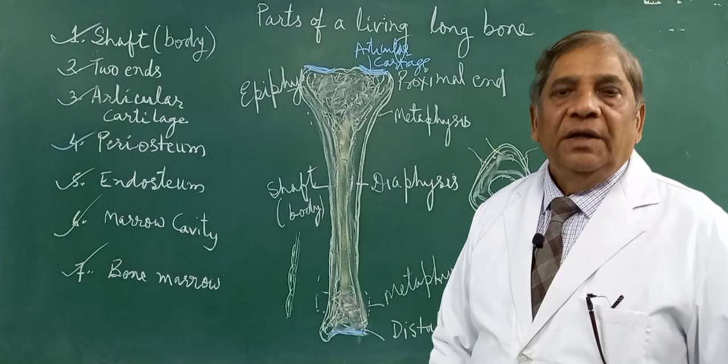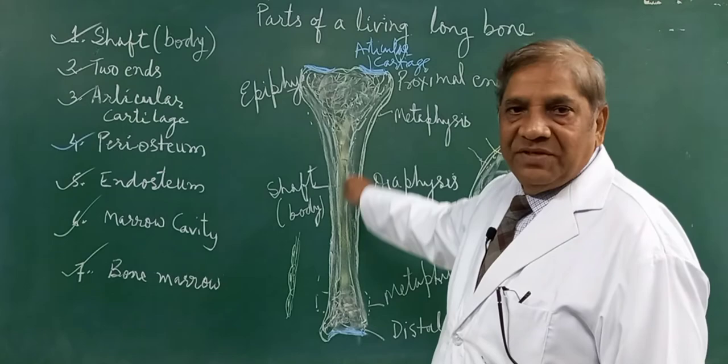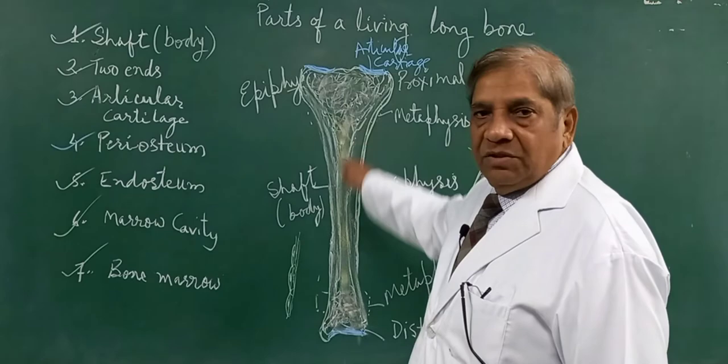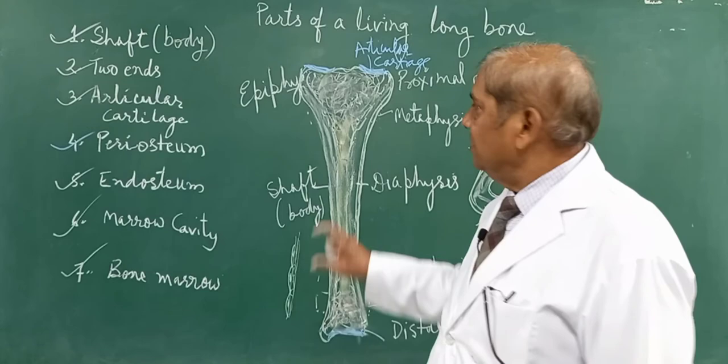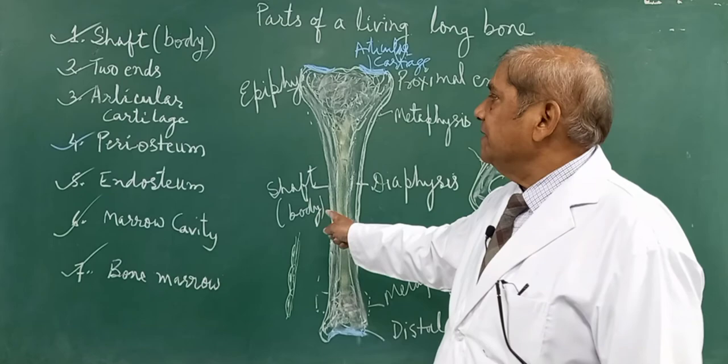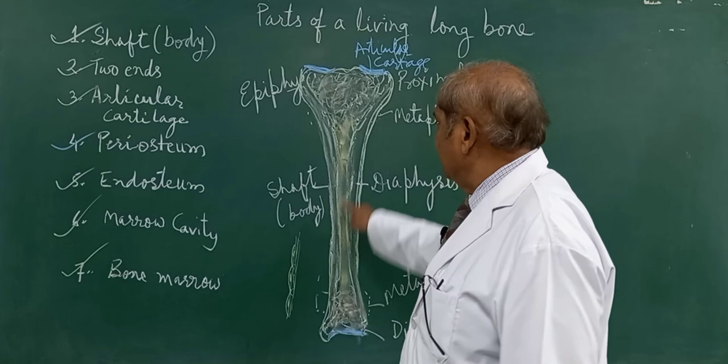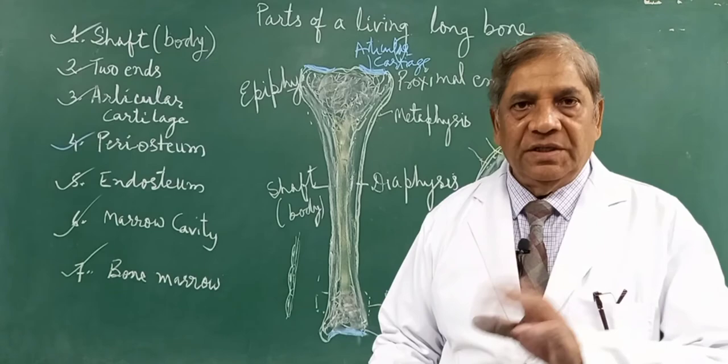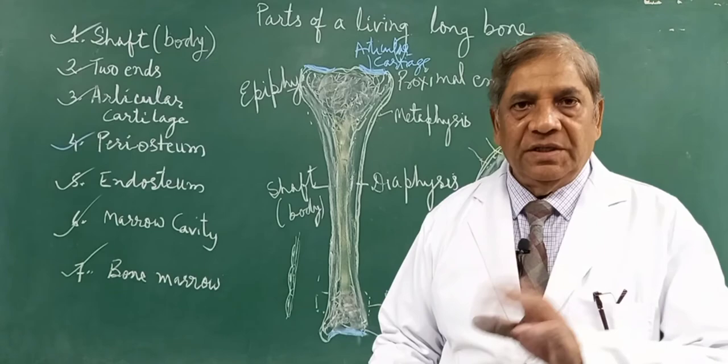In summary, a living long bone is a living structure which has many parts: it has a shaft or body, it has proximal and distal ends. The proximal and distal ends are called epiphysis, the shaft is called diaphysis, and the expanded part of the shaft at both ends is called metaphysis. Then there is articular cartilage at the ends, then periosteum on the outside, then endosteum on the inside, and the marrow cavity filled with bone marrow — which is a bone-forming tissue inside the body. Thank you very much for this video on the parts of a living long bone.